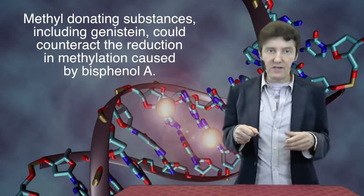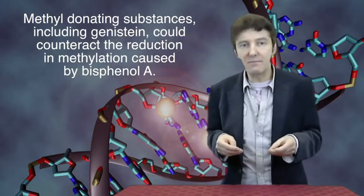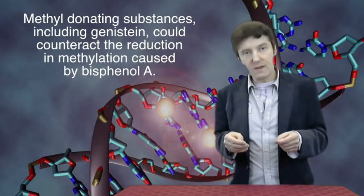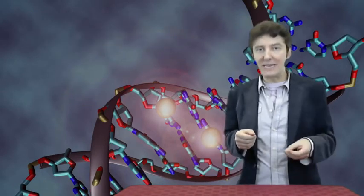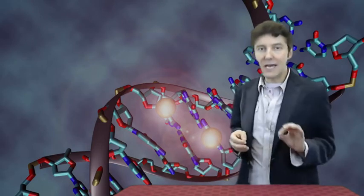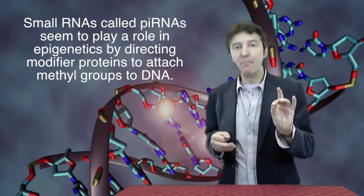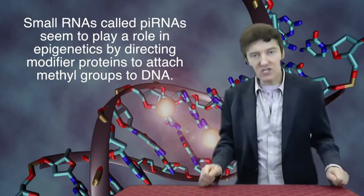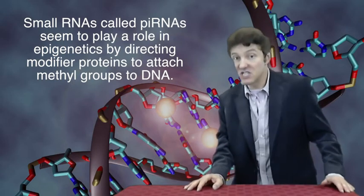They also found that a constituent of soy products called genistein prevented an increased number of unhealthy offspring. Well, no one can yet explain exactly how epigenetic information gets passed to the next generation. The clues we have suggest a role for small RNAs called pi-RNAs. They direct modifier proteins to attach methyl groups. We've attached an article to the lecture for those interested in the details, such as we know them.